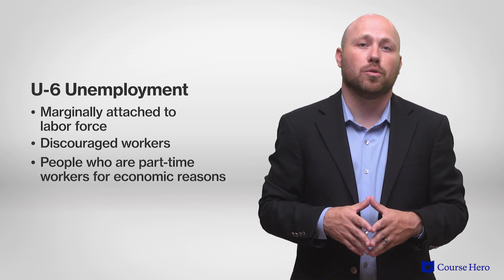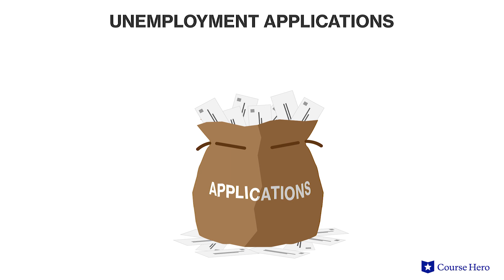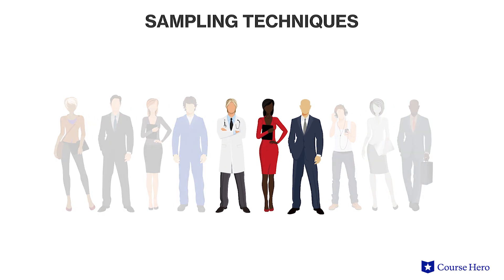U6 also includes the number of people who work part-time for economic reasons. Because it is impossible to ask every citizen each month if they were employed or unemployed, the BLS makes an estimate. Other countries use a total count based on applications for welfare programs or registration at employment agencies, while some countries use a sophisticated sampling technique in which a small proportion of the population is surveyed. Differences in measurement between countries make cross-country comparisons of unemployment rates difficult.